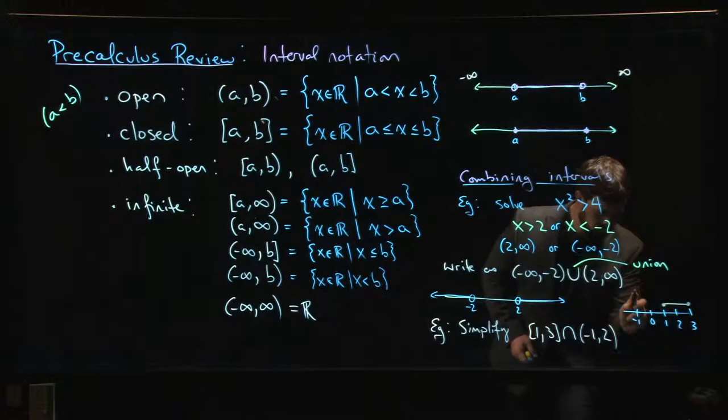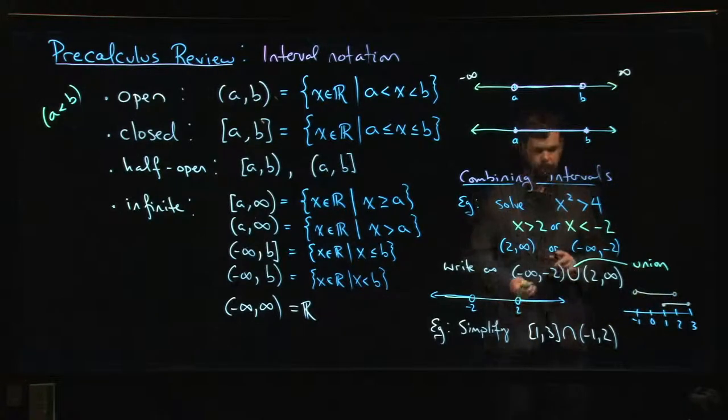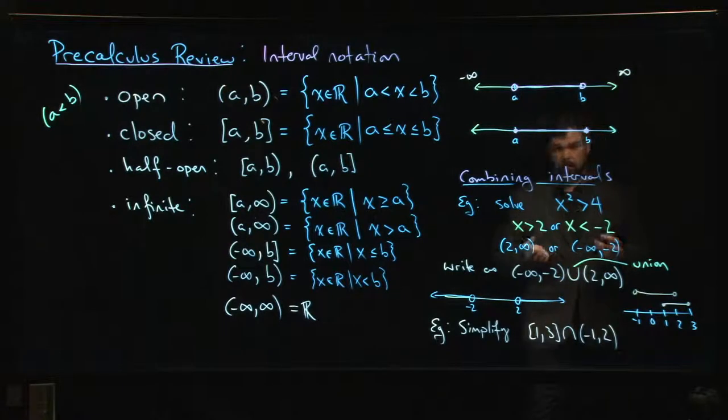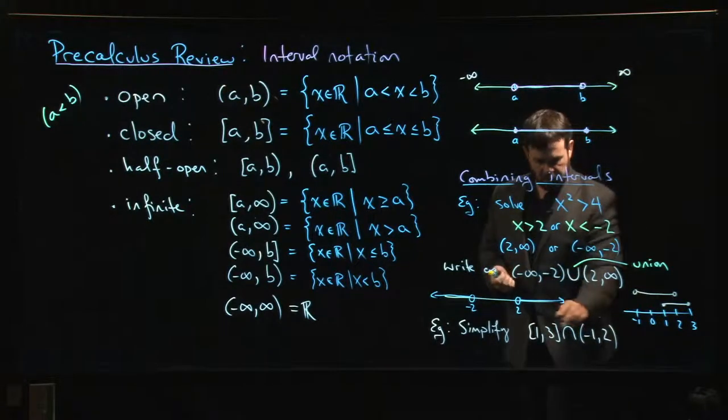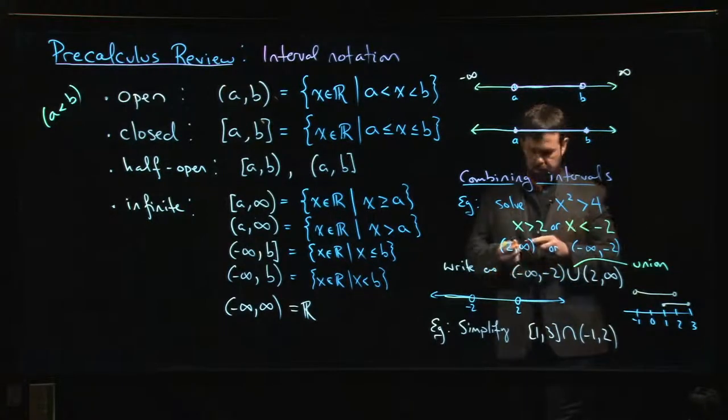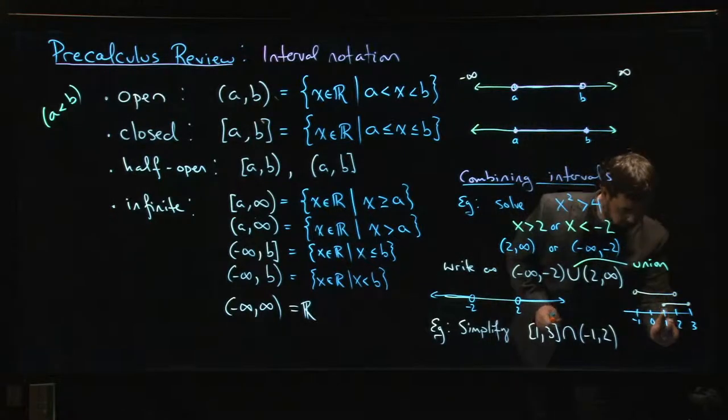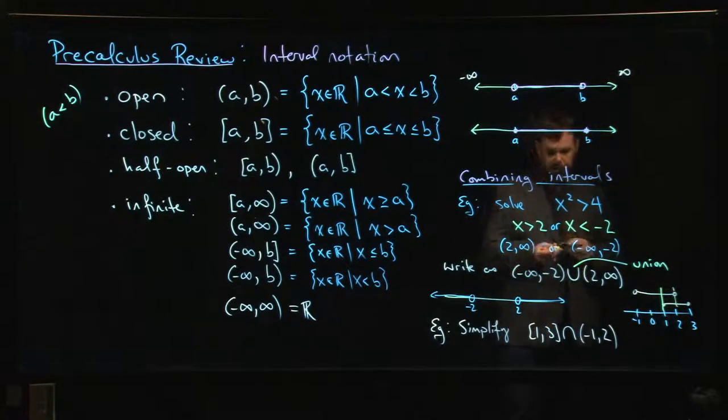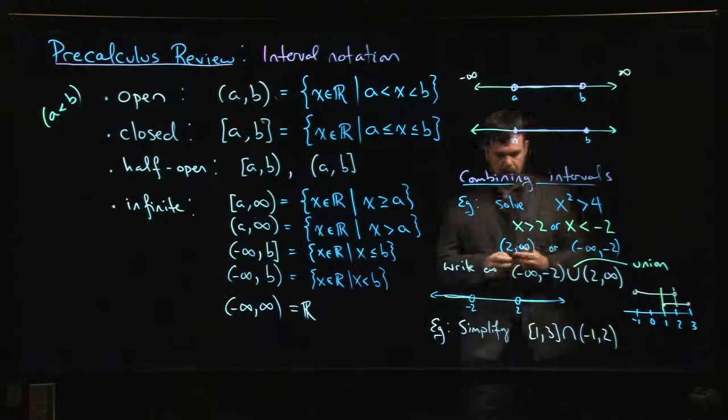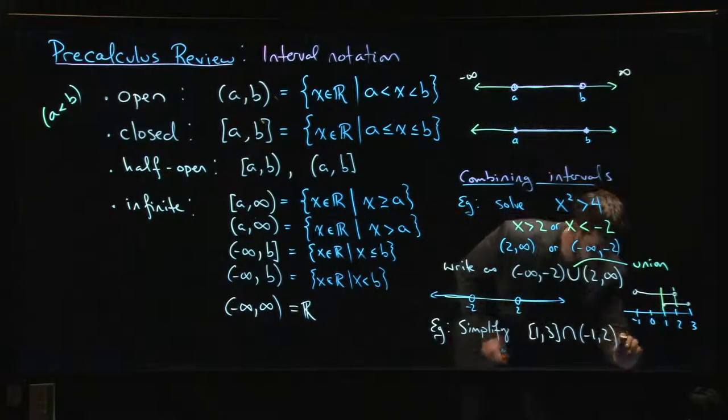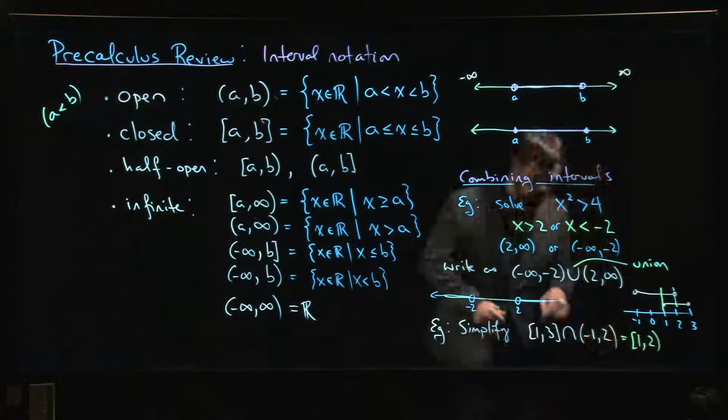When you're doing intersection, you're keeping all the numbers that belong to both. All the numbers that belong to both are between here and there - all the numbers which are bigger than or equal to 1 but smaller than 2. So this would be [1, 2).